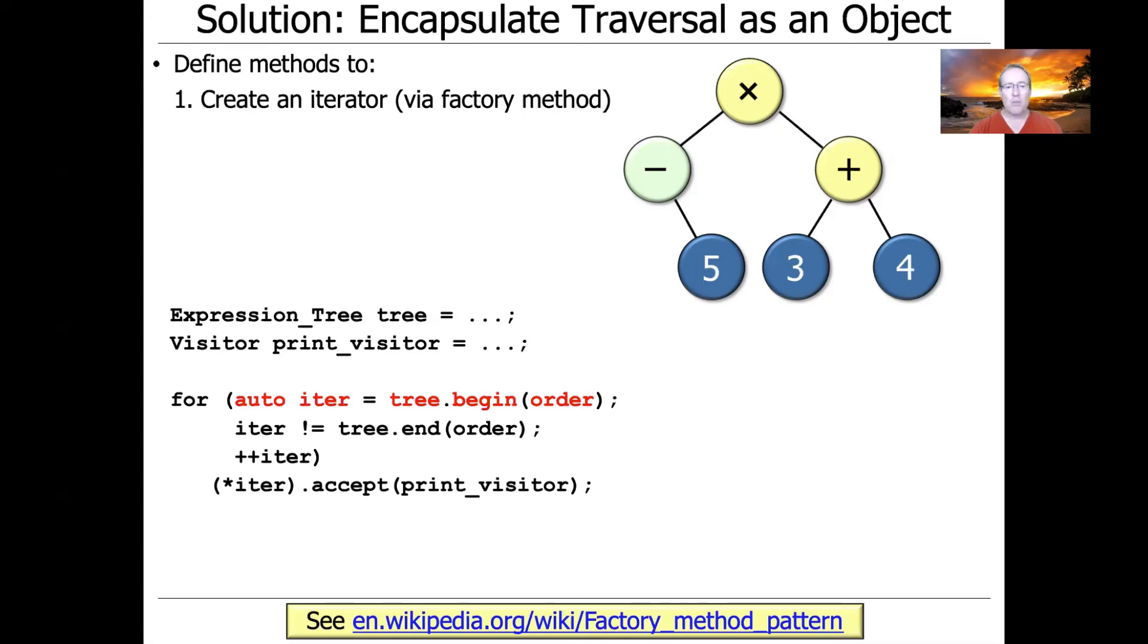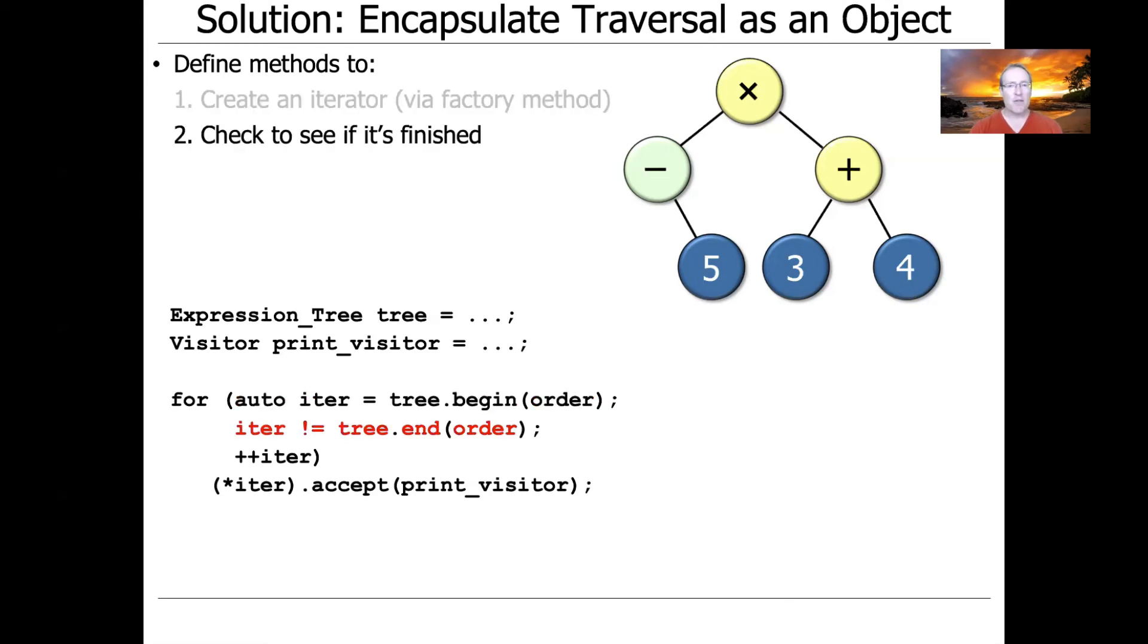I treat it here as an auto, but of course under the hood, it's going to be expression tree colon colon iterator, because we have a trait defined to do that. Then we're going to check to see if we're done. So while the iterator is not done, in other words, we check against the end iterator. And as long as they haven't reached the point where they're equal,